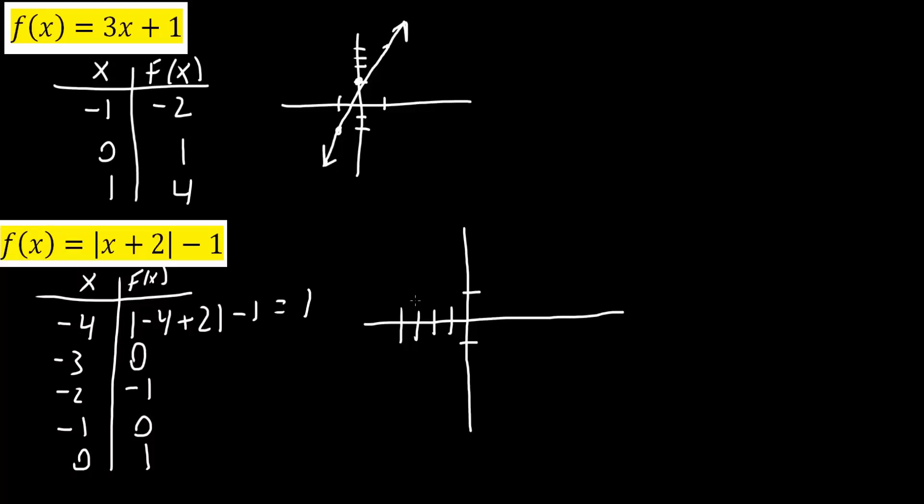So the first one is negative 4, 1. Next is negative 3, 0. Then negative 2, negative 1. And then it starts picking up. It goes up. So negative 1, 0. Finally, 0, 1. So the general shape would be this. It's going up here, going down here, but then going up here. And so this right here would be the final answer to the problem.